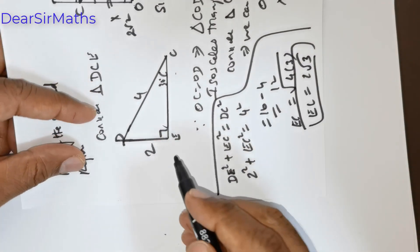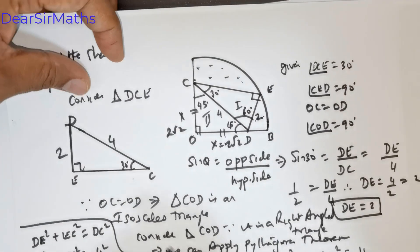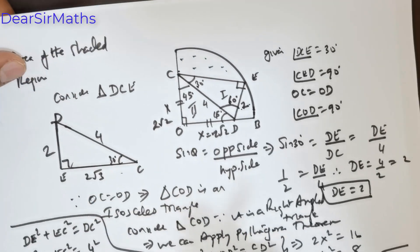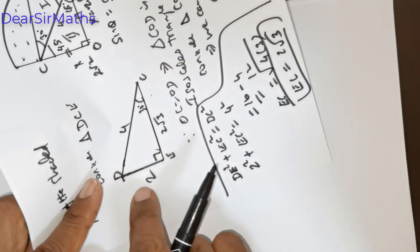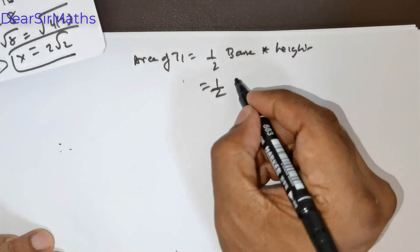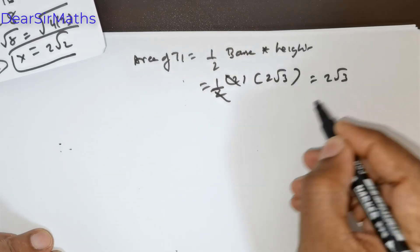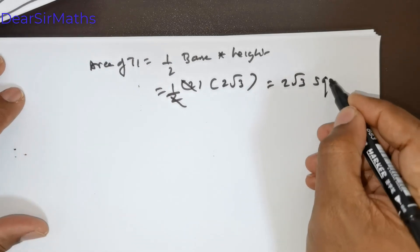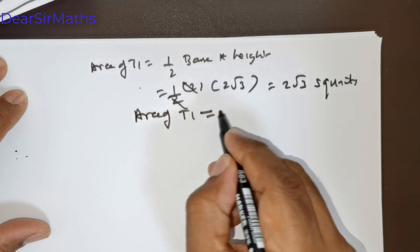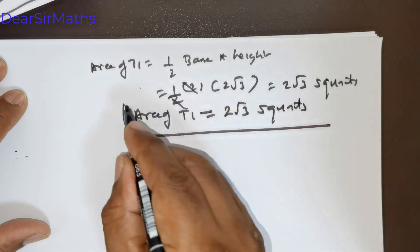If you move the triangle so the base is 2 and the height is 2√3, then area of T1 equals half times 2 times 2√3. The 2s cancel, giving 2√3 square units. So area of triangle T1 is 2√3 square units.